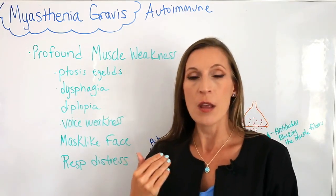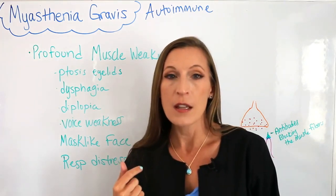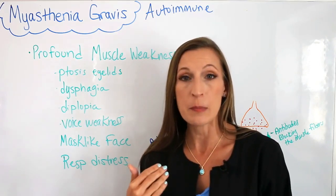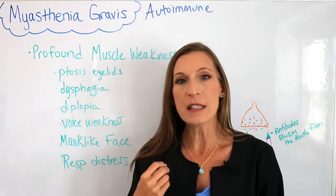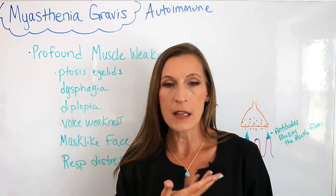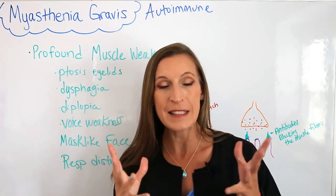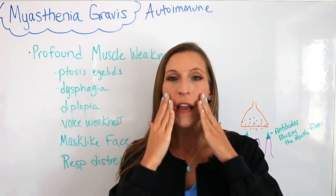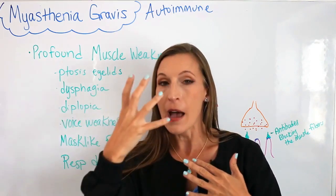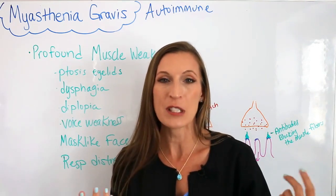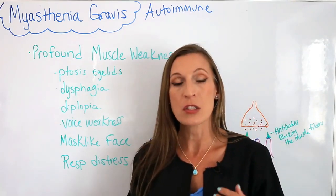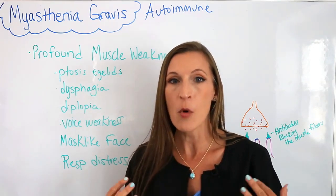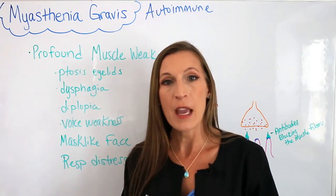Diplopia, or double vision — there are extraocular eye muscles that help control vision. Voice weakness, because the larynx has muscles that must contract and move to help us speak. A mask-like face describes the person who cannot make facial expressions because the muscles in their face aren't working — they can't smile or make regular expressions, so their face is flat, as if a mask is on it. And respiratory distress can occur if the muscles that help move breathing — the diaphragm or accessory muscles — are affected.